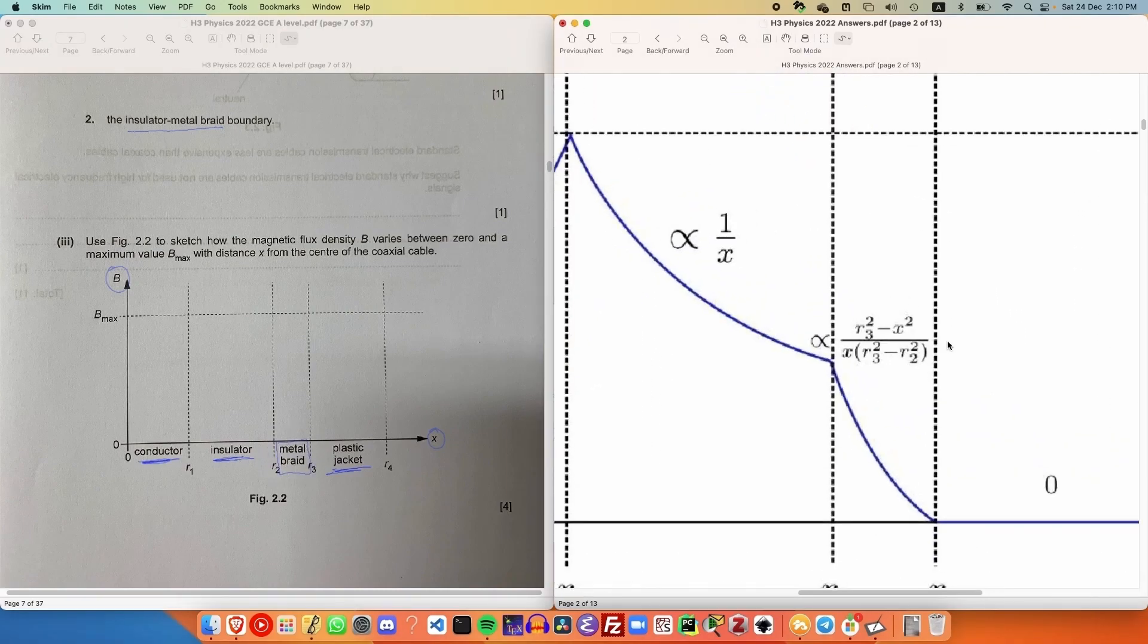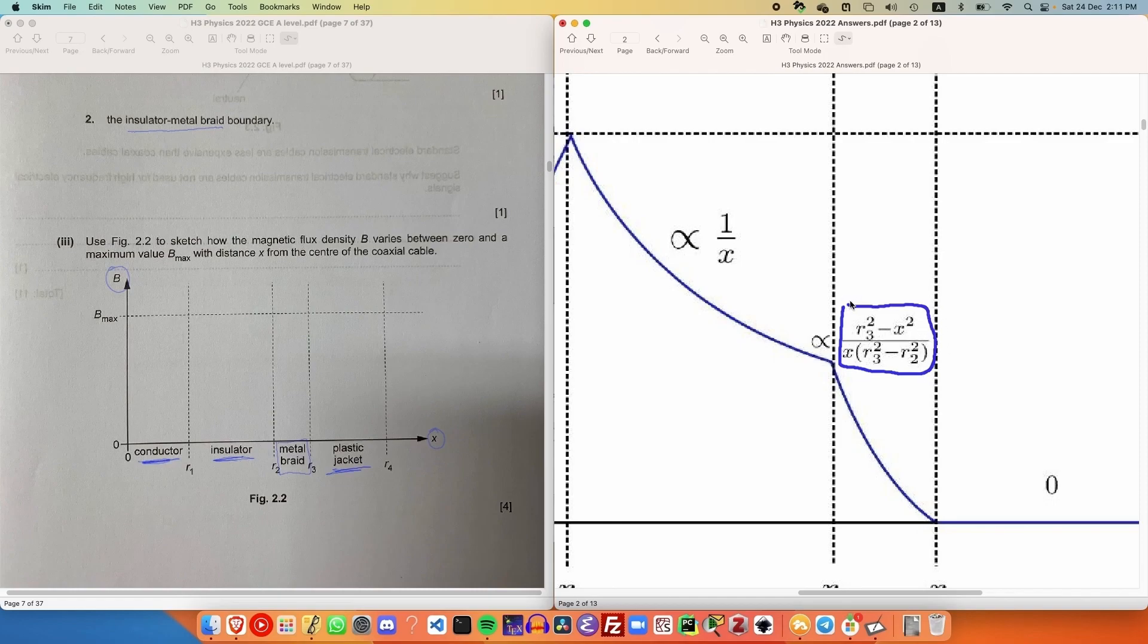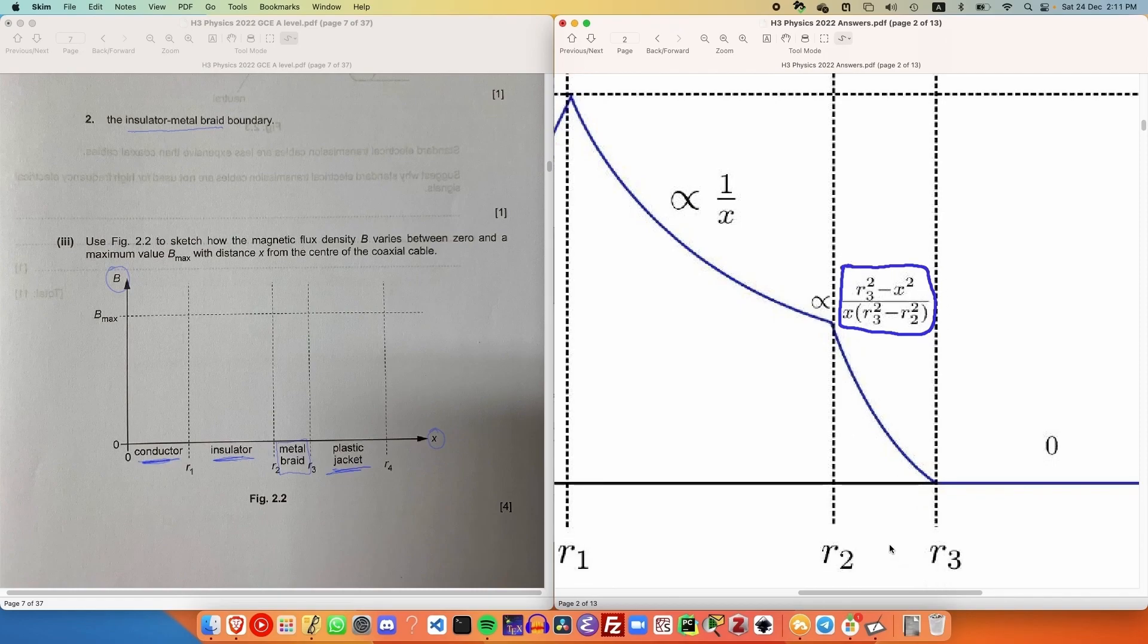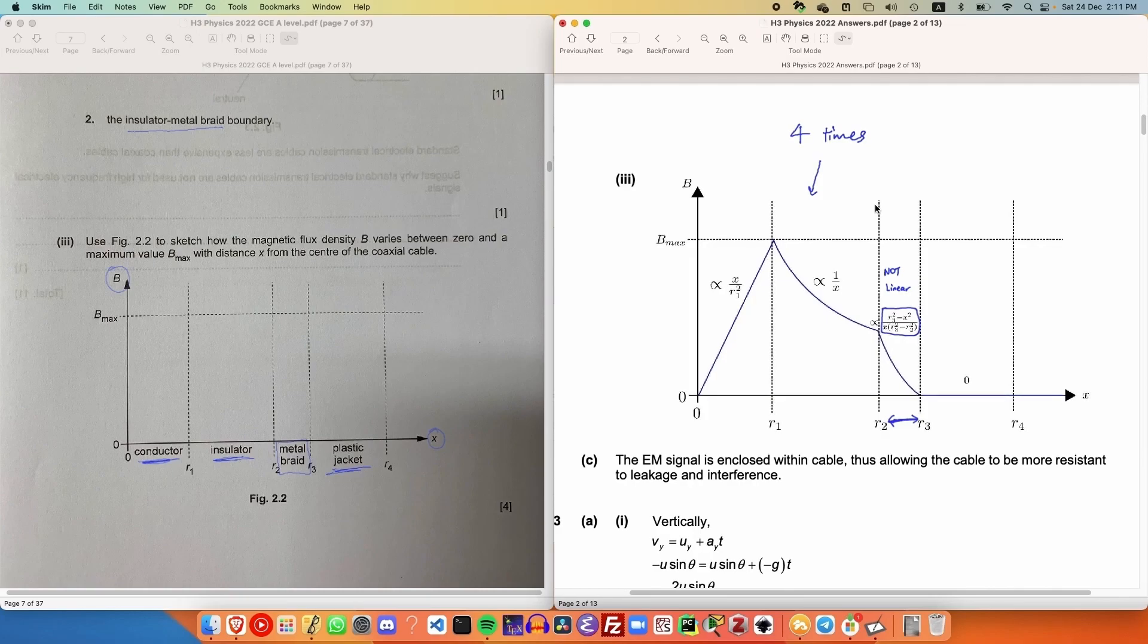The expression eventually boils down to this expression over here, which I'll not cover in detail, but do note that between R2 and R3, the graph is not linear. If you wish for a more in-depth tutorial for this particular part, do let me know in the comments below.